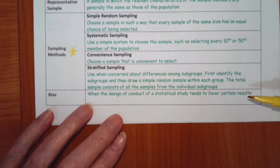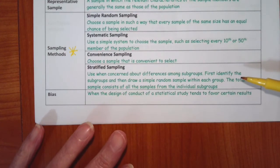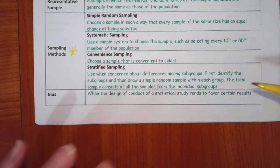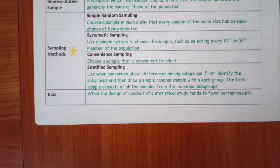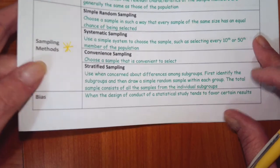And then stratified is if you take your group and turn it into subgroups that are different. Again, either men and women. Or it could be, you know, I don't know, you could split it racially. You could do anything that you wanted that, but you would expect different results from different samples. Now bias is when the design of conduct of a statistical study tends to favor certain results. Most studies will have some sort of bias. It's really hard not to.